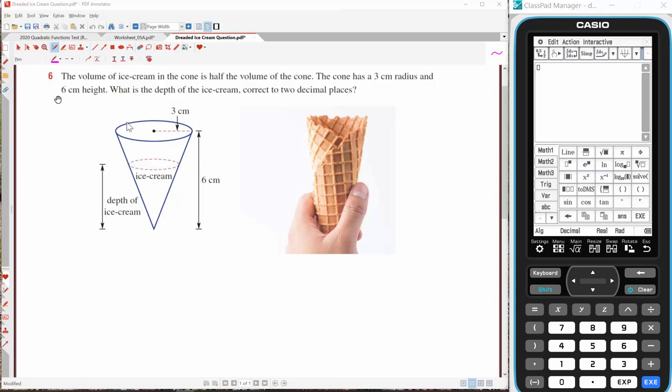What I'm going to do is set up a relationship here. The volume of ice cream in the cone is half the volume of the cone. Now, I know that the volume of a cone is 1/3 πr²h. Now, that formula is given to you in 3, 4 and 1, 2 methods, so you don't need to remember that. You just need to know where to find it to use it. So, I know that half the volume of the cone is equal to the volume of ice cream. That's what they've told me.